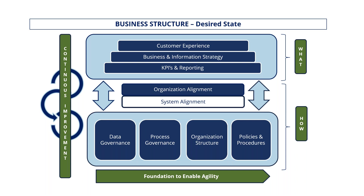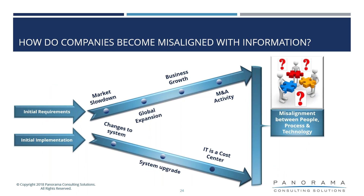What we see with a lot of organizations is that when you did your implementation say 10 or 15 years ago, the system and the business were aligned. Then things changed — markets, global expansion, growth — the organization went one way, the systems went another with upgrades, and now there's a disconnect. Some organizations we walk into say the system is no good and needs replacing, but when we do requirements we sometimes say: you don't need new software. The one you have is great — you're just not using it to its full capability and haven't built the process around it.